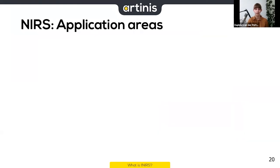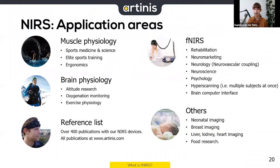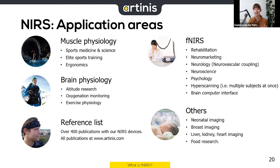Now let's look at what NIRS is actually used for. Applications include muscle physiology, brain physiology, and other organs such as the liver, kidney, and heart — even food research. For today, we'll focus mainly on fNIRS, which is used for neurorehabilitation, neuromarketing, neurology, neuroscience, psychology, and computer interfaces, among many other applications.